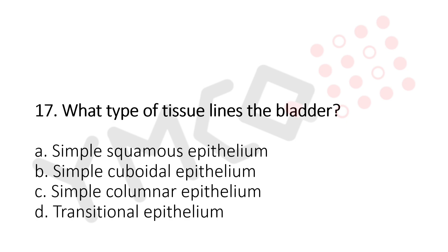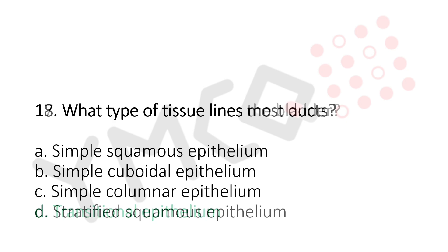Question 17: What type of tissue lines the bladder? Option A: simple squamous epithelium. Option B: simple cuboidal epithelium. Option C: simple columnar epithelium. Option D: transitional epithelium. The answer is Option D, transitional epithelium.